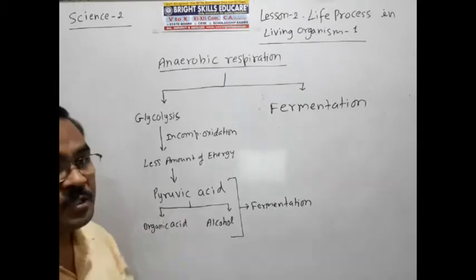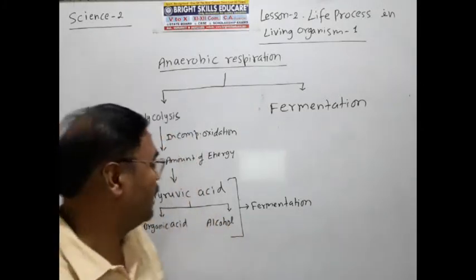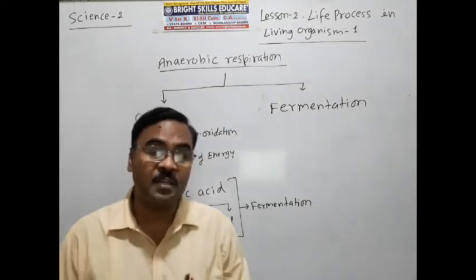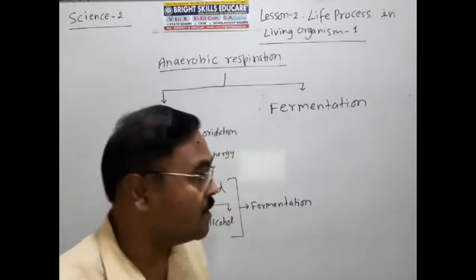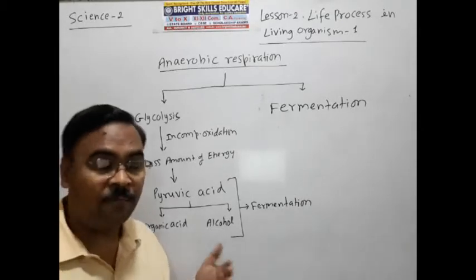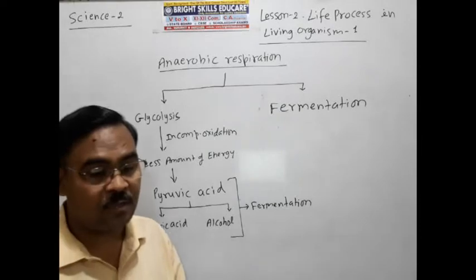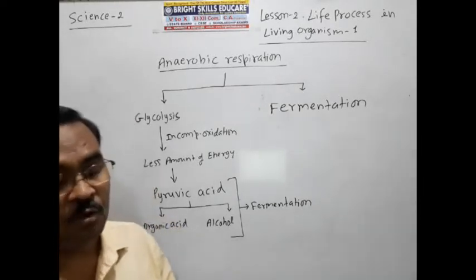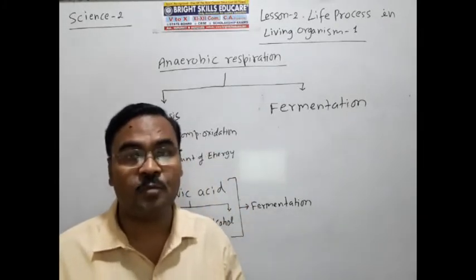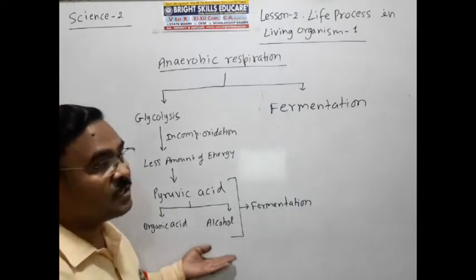What happens in the glycolysis process? What happens to pyruvic acid? Pyruvic acid undergoes a process, and in anaerobic respiration, what happens is fermentation. Fermentation is when pyruvic acid is converted into organic acids and alcohols. Different types of organic acids and different types of alcohols are produced. So many products are produced by the fermentation process — organic acids and alcohols are made.